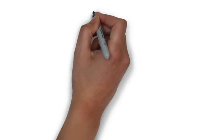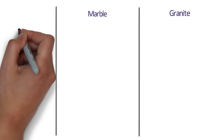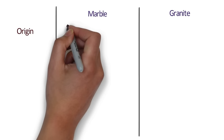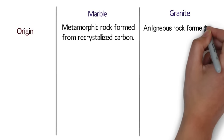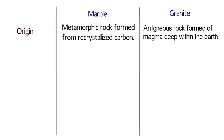Marble is a metamorphic rock formed from recrystallized carbon. It is formed out of limestone that is subjected to intense pressure and heat due to tectonic shifting in the earth's crust. Granite is an igneous rock which means that it was formed from magma deep within the earth. A separate video on granite has been created and its link is shared in the description below for more information.